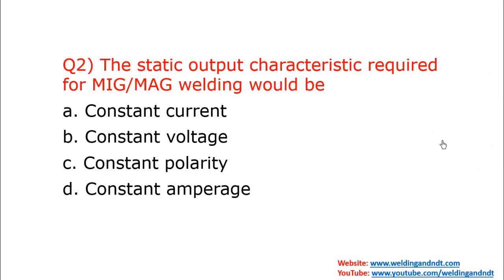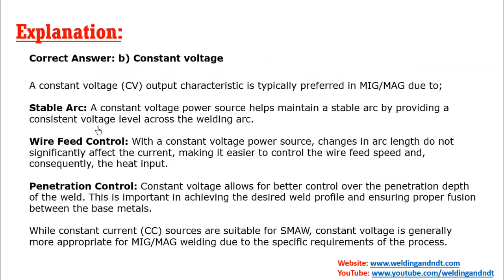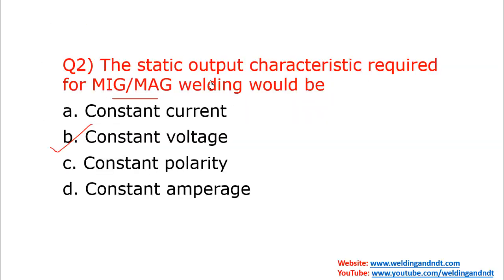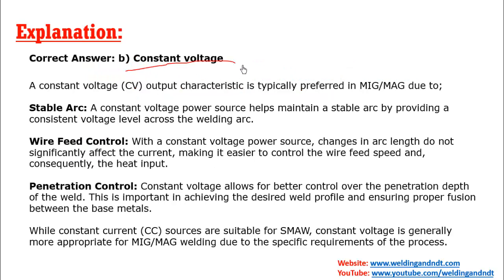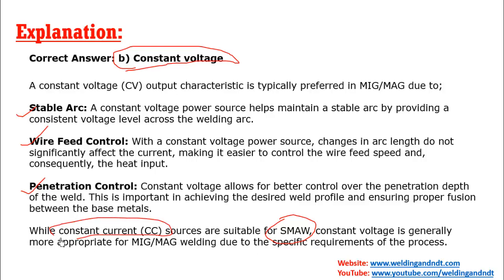Our second question is: the static output characteristic required for MIG or MAG welding would be? The correct answer is constant voltage. In MIG or MAG welding, constant voltage characteristic is required — it gives a stable arc, better wire feed control, and good penetration control. For SMAW (shielded metal arc welding), constant current characteristic is used, while for GMAW, constant voltage is used.